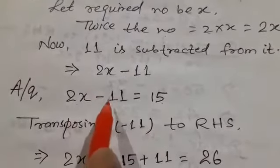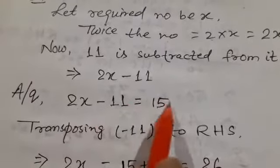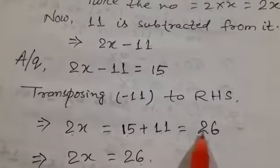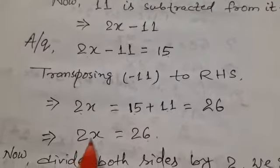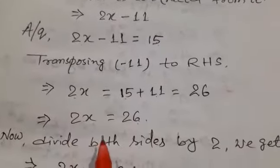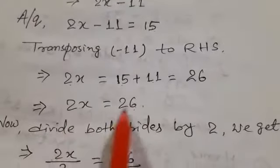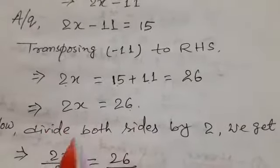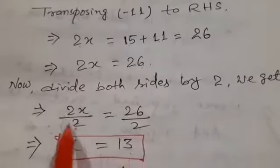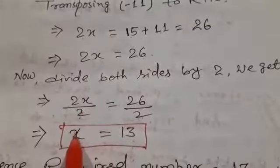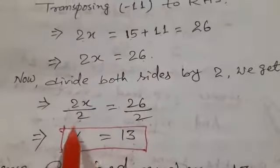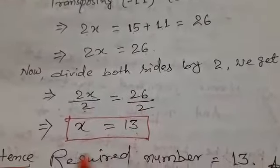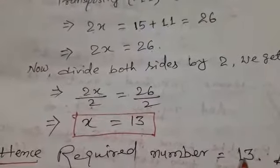Transposing −11 from LHS to RHS it becomes positive, so 2x = 11 + 15 = 26. Now dividing both sides by 2: 2x/2 = 26/2. The 2s cancel, giving x = 13. Hence the required number is 13.